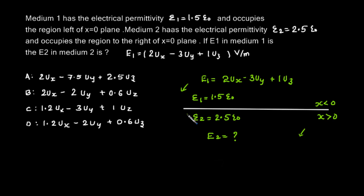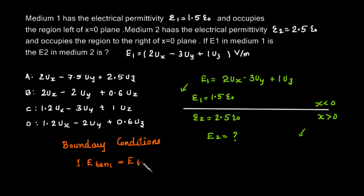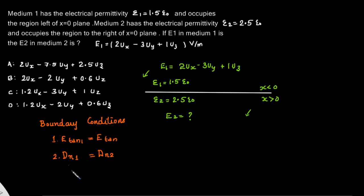We know the boundary conditions: the tangential electric field is continuous. The surface charge rho_s is 0, so the normal component of the electric flux density will be continuous. This implies epsilon 1 times the normal component equals epsilon 2 times the normal component.